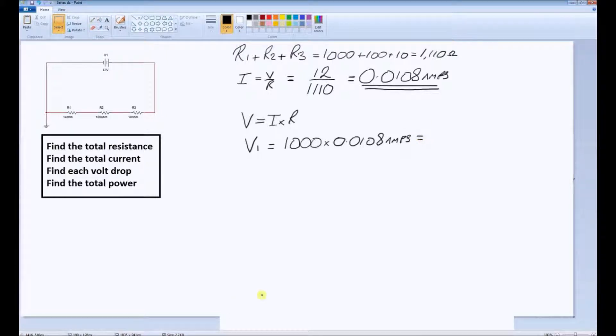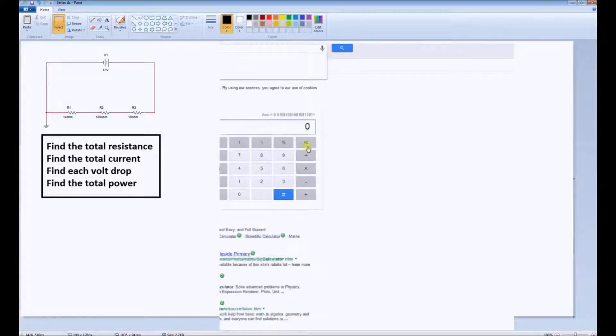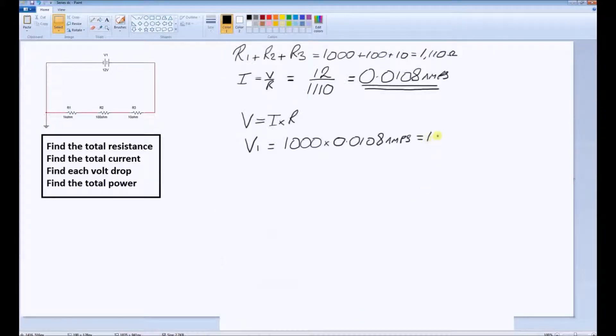We'll go to our calculator. 10.8 volts. Now, one thing to note. Each of the resistances is 10 times smaller than the preceding resistance.